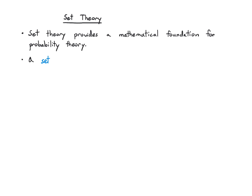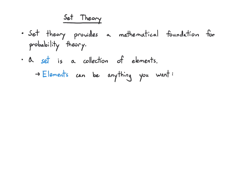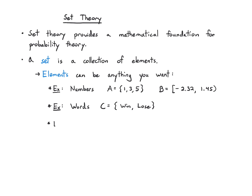A set is really just a collection of elements, and these elements can be anything that you like. The simplest thing you might think about is just numbers — so maybe A is {1, 3, 5}, natural numbers. Or I could have real numbers: B is from minus 2.32 to 1.45 and everything in between. But we could be a little more abstract — words as elements of a set, like win and lose, or even animals like a cat and a dog.